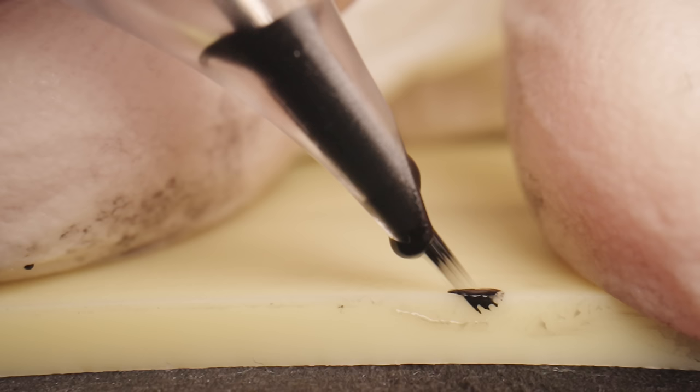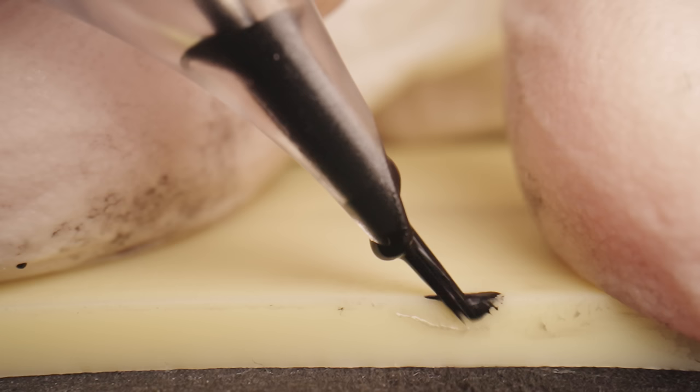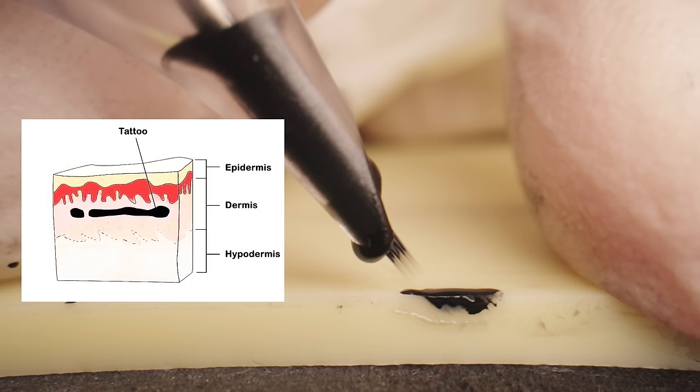During tattooing, tattoo ink is injected into the skin using needles of different thicknesses and shapes, ranging from 0.5 millimeters to 1.5 millimeters deep, penetrating through the top layer of skin, the epidermis, into the underlying dermis layer. This applies to all needles.